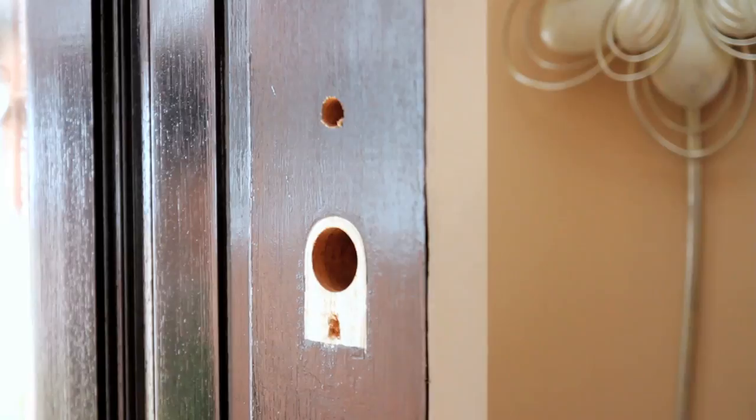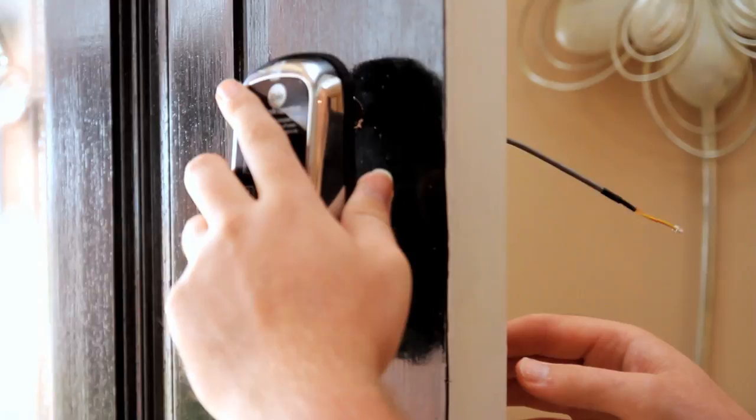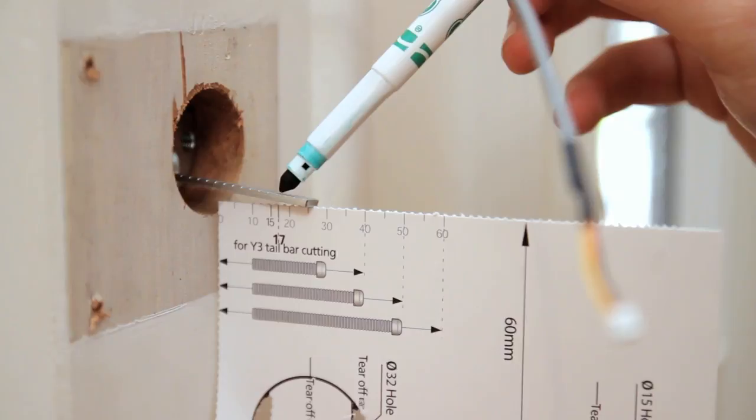Place your new Yale Digital Lock in the hole on the outside of the door with the battery cable through the 15mm hole. Using the ruler on the template, measure 17mm from the door surface and mark the connecting bar, ensuring the bar is horizontal.